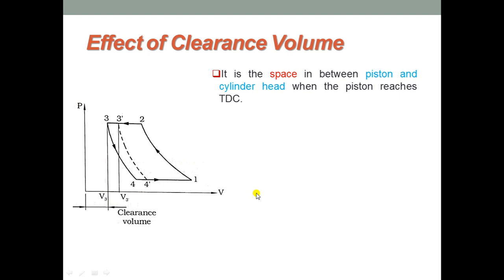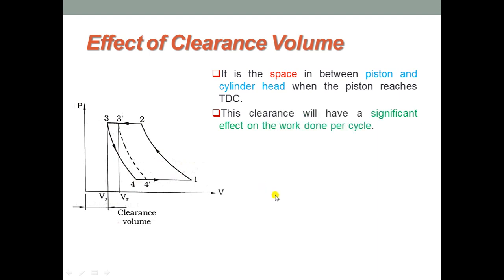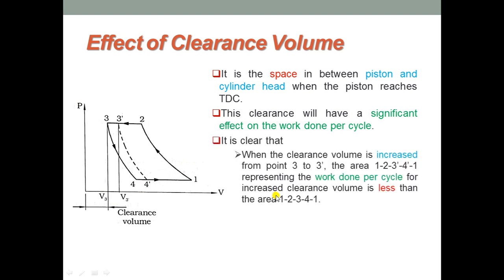This clearance has a significant effect on work done per cycle, as illustrated in the P-V diagram. When the clearance volume is increased from C3 to C3 dash — that is, the volume increases from V3 to V3 dash — the area representing cycle 1-2-3dash-4dash-1, which is the work done per cycle for the increased clearance volume, is less than the area 1-2-3-4-1. Thus, an increase in clearance volume causes a decrease in work done per cycle.